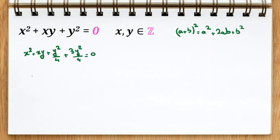Then the first part is x plus y over two squared plus three y squared over four equal to zero.